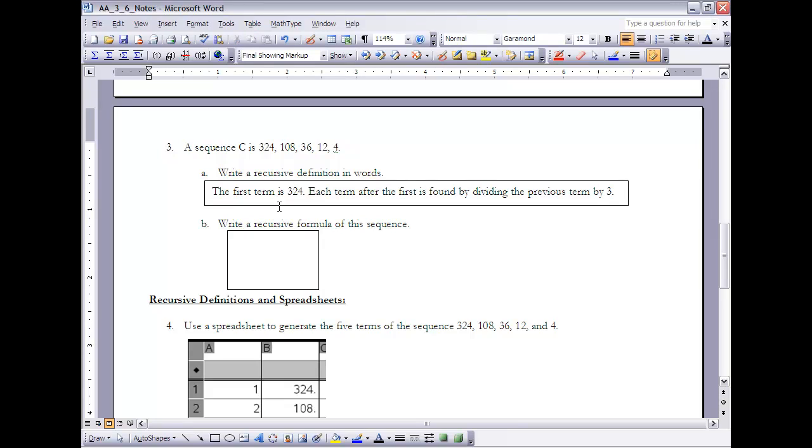It's going to be the following: the first term is 324—and when you're doing it recursively, we always have to state what the first term is—and then each term after the first term is found by dividing the previous term by 3. Now, if I want to write that recursive formula, the way I'm going to do that is I'm going to do the exact same thing, but I'm going to write it like this: C sub 1 would be 324, and C sub n would be the previous term, C sub n minus 1, divided by 3.